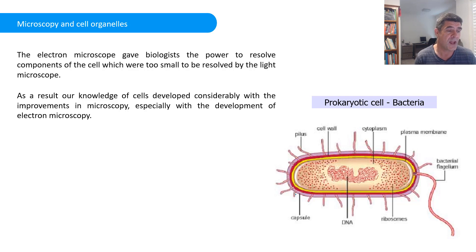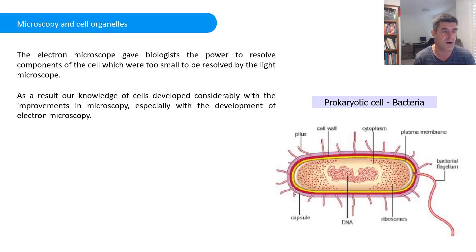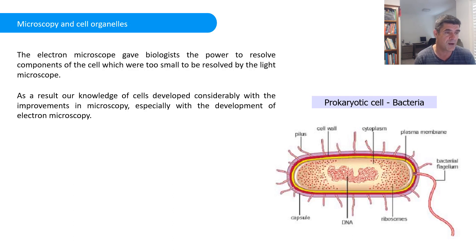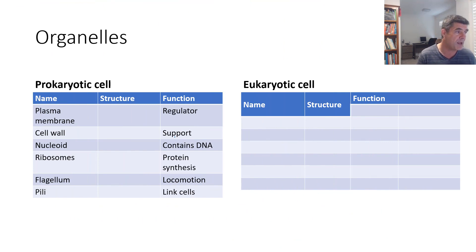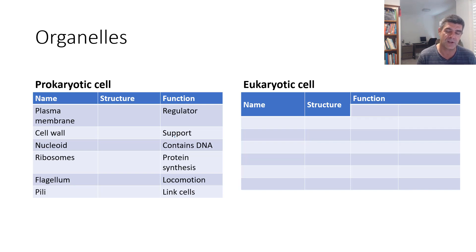With prokaryotic cells, we don't have membrane-bound organelles. We do have ribosomes and DNA present, but it's in a disorganized form in what's often referred to as a nucleoid — because it's not a nucleus as we would see in eukaryotic cells, but the DNA is still present. We do have a plasma membrane or cell membrane around the cytoplasm, and often a cell wall and/or a capsule enclosing the cell. There may also be other structures attached to the outside like pili or flagella. So in our table for prokaryotic cells, we have a plasma membrane, cell wall, nucleoid, ribosomes, and those external structures.